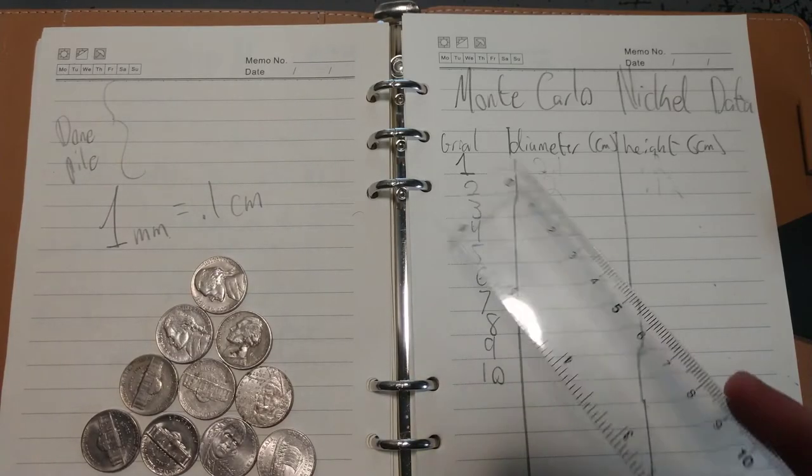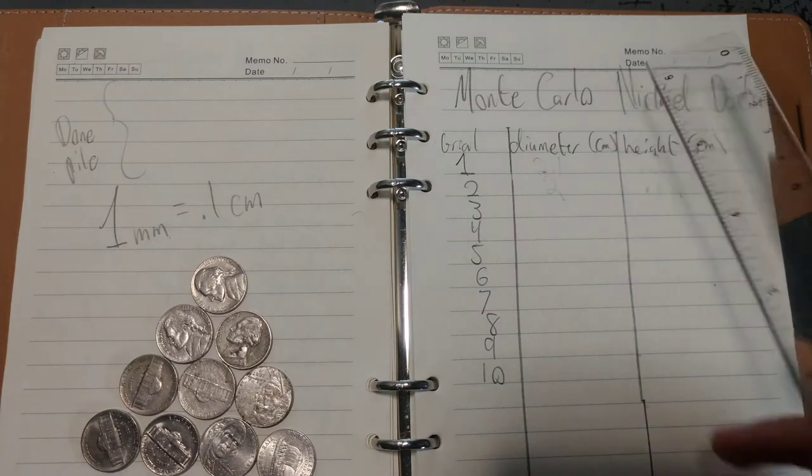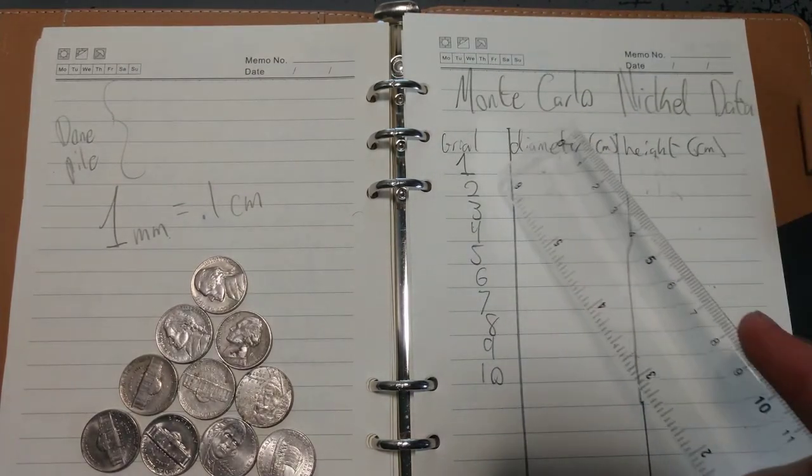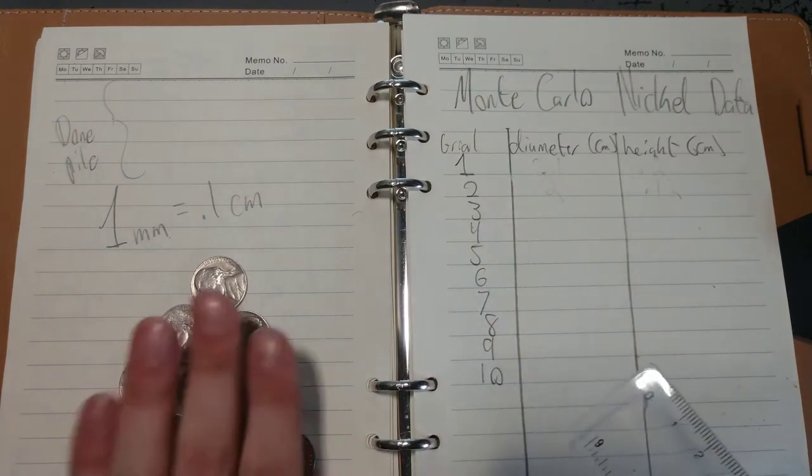Hey, this is taking data for the Monte Carlo coin lab. We're using a nickel this time. I have a data table set up with nickels 1 to 10.